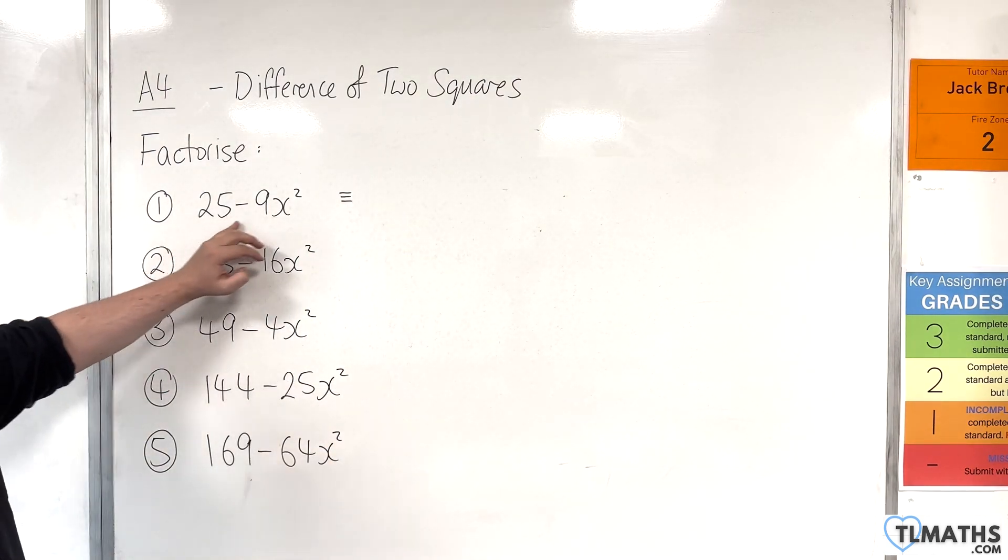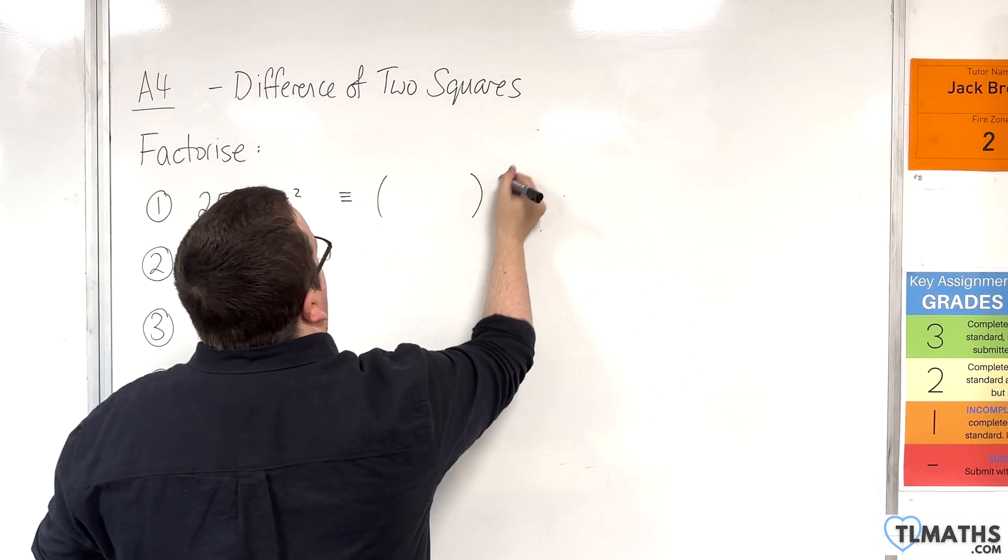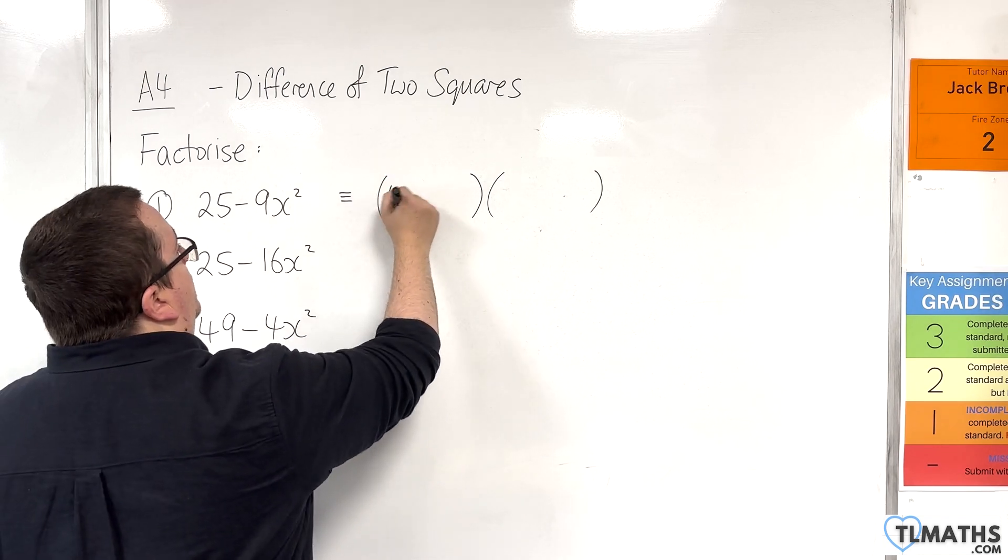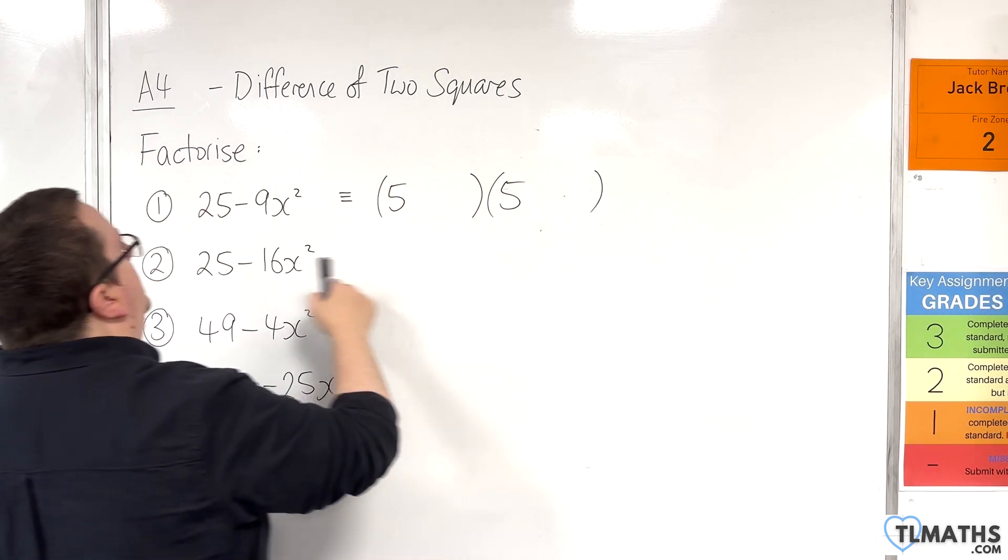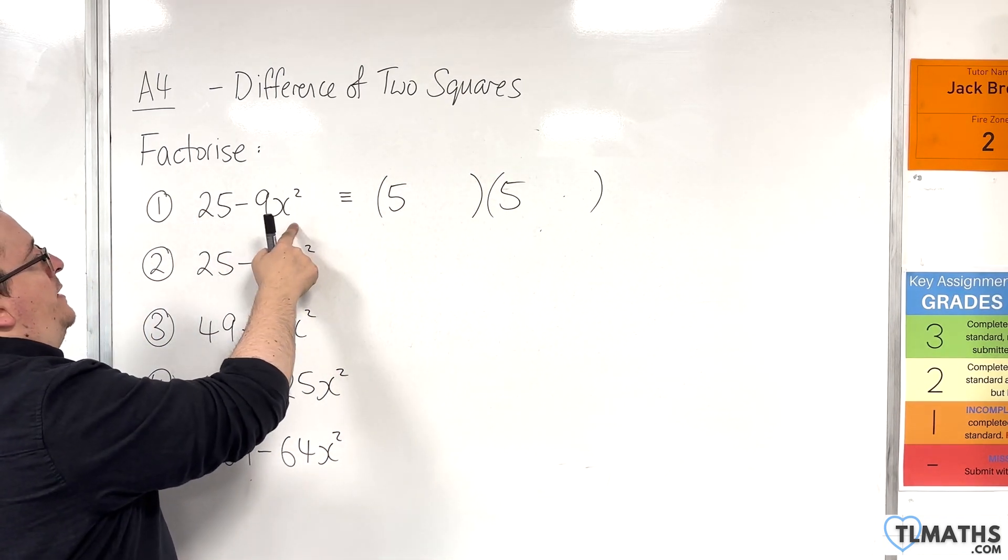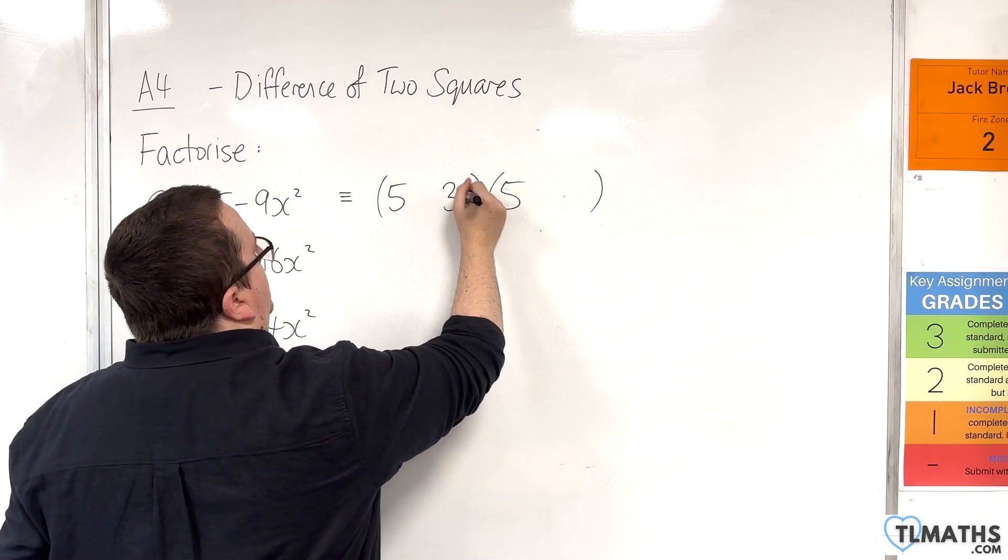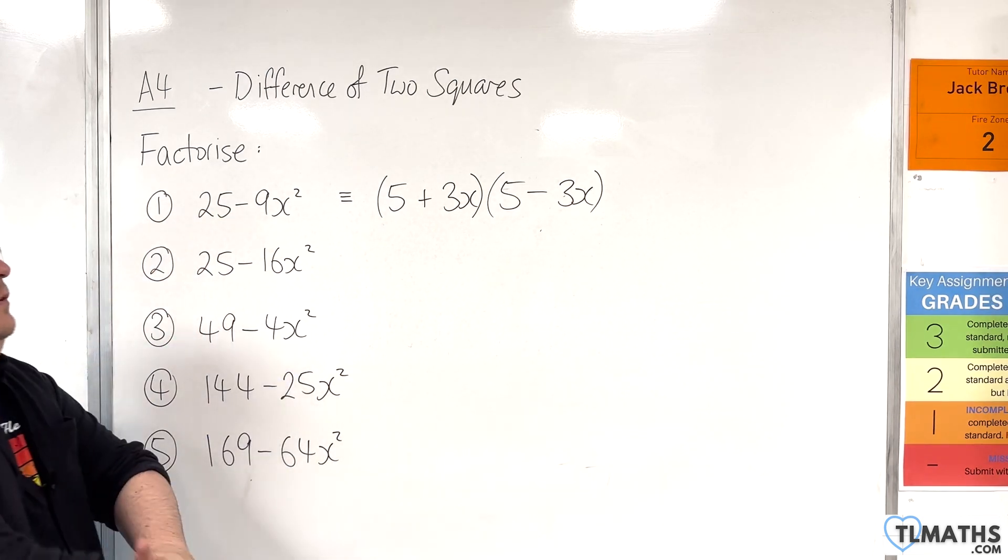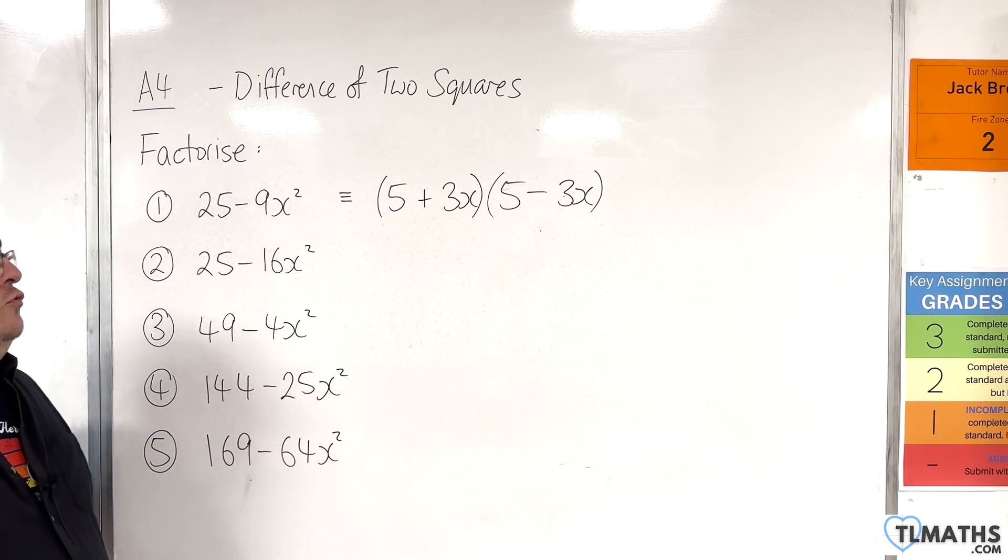25 take away 9x squared. Okay, so the square root of 25 is 5, so 5 goes in first. Then, the square root of 9x squared is 3x, so that goes in there and there. And then, one's a plus and one's a minus. And so, it's now factorized.